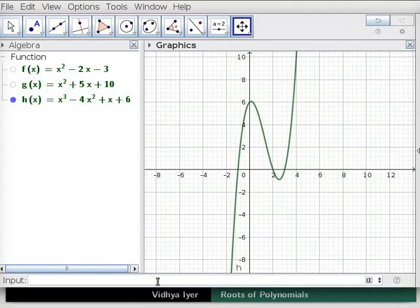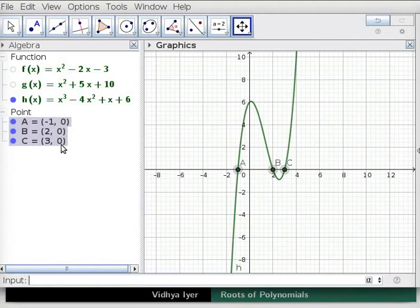In input bar, type root(h) and press enter. The coordinates of three roots a, b and c appear in algebra view. The three roots are also mapped as x-intercepts of the curve h of x in graphics view.